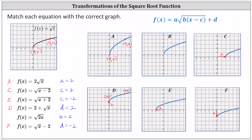This leaves us with the remaining function and graph B, where b equals positive two, which indicates a horizontal compression by a factor of one-half, the reciprocal of b. This affects the x values. To find the corresponding points on the transformed function, we would multiply the x values of the basic square root function by one-half, giving us (0, 0) and (2, 2), because one-half times four is two. Notice the remaining graph passes through (0, 0) as well as (2, 2).